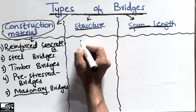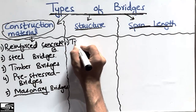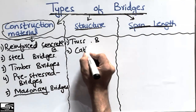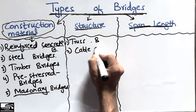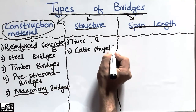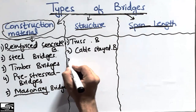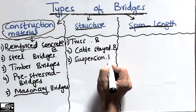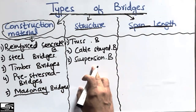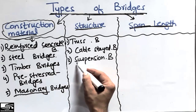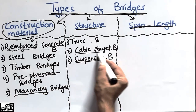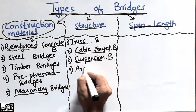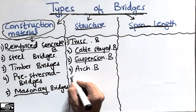According to structure, bridges are classified as: first, truss bridges; second, cable-stayed bridges — these come under the category of structure; third, suspension bridges — also coming under the category of structure bridges. Each has a different structural phenomenon: suspension bridges have one type, cable-stayed bridges have another, and truss bridges another. The fourth one is the arch bridge, which has a different structural phenomenon.